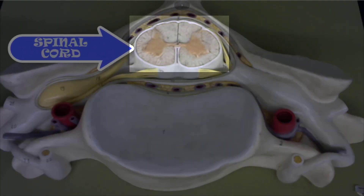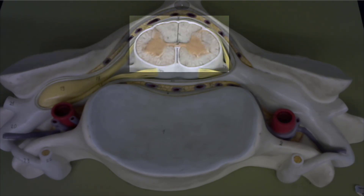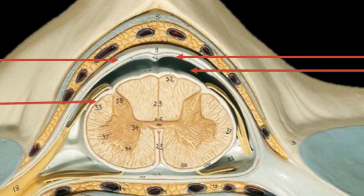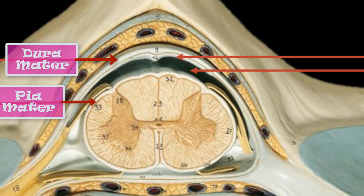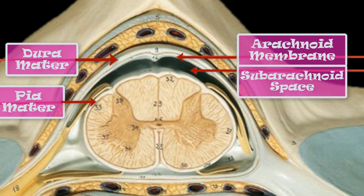Here we have the spinal cord. The spinal cord, just like the brain, is wrapped by meninges. The meninges shown here in white, closest to the spinal cord, is the pia mater, which means 'the loving mother.' This outer white meninges is the dura mater, which means 'tough mother.' In between the pia mater and dura mater we have the arachnoid membrane, and deep to the arachnoid membrane we have the subarachnoid space.